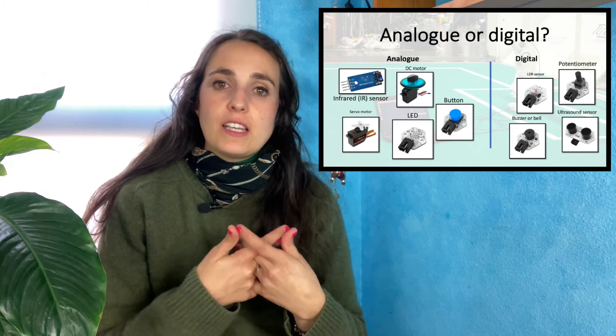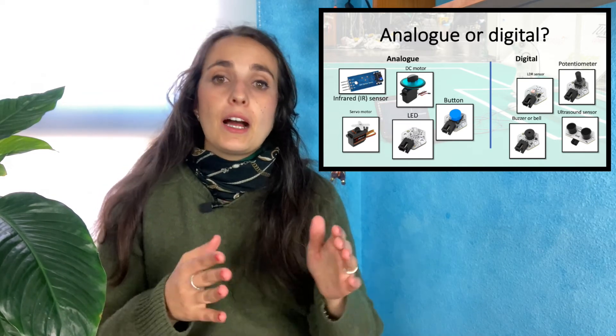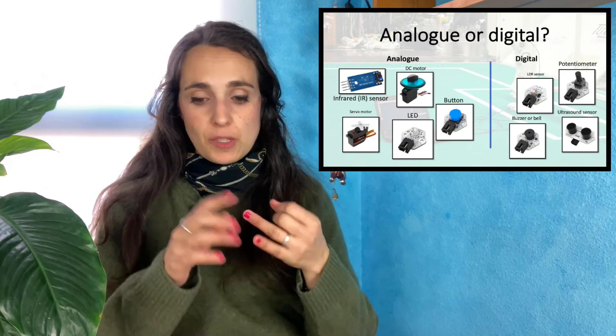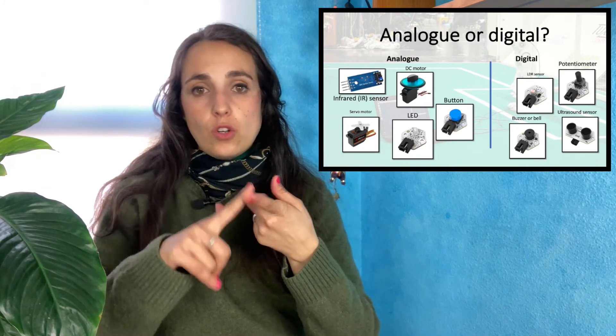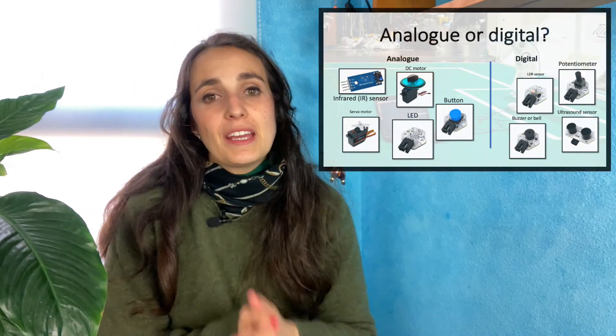For a motor that simply moves or does not move, we consider it digital. Analog components include the ultrasound sensor, the potentiometer, the LDR light sensor, and the buzzer, because the buzzer can emit different types of sounds and different signal intensities. Both sensors and actuators can be digital or analog — it's not the case that all sensors are digital and all actuators are analog; they can be mixed.